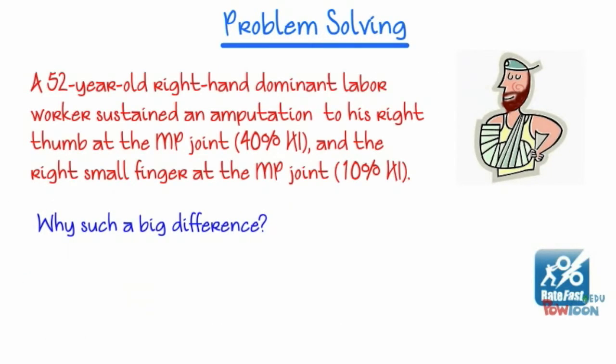Let's do some problem-solving. A 52-year-old right-hand dominant labor worker sustains an amputation to his right thumb at the MP joint — this is 40% hand impairment — and also an amputation of the right small finger at the MP joint, which is 10% hand impairment.